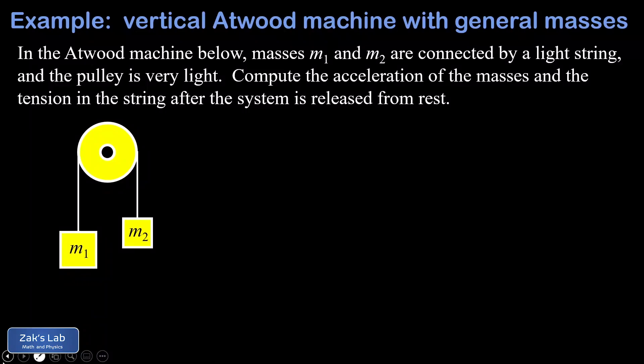In this video we're analyzing a general vertical Atwood machine, where the masses are given symbolically as m1 and m2 instead of actual numbers. We have two main goals: find the acceleration of this Atwood machine and the tension in the string after it's released from rest.